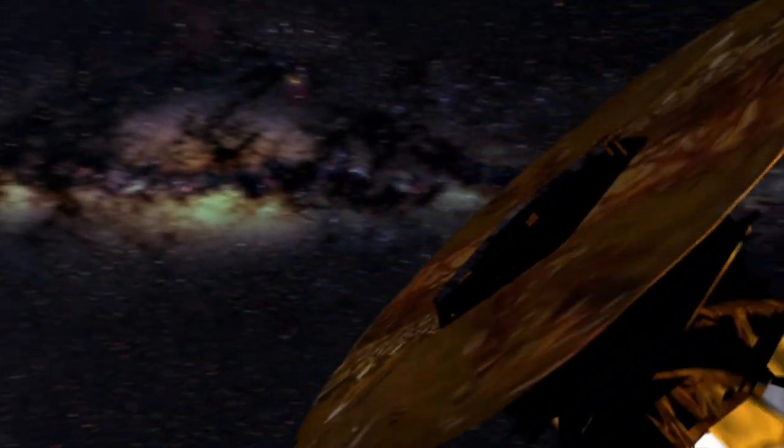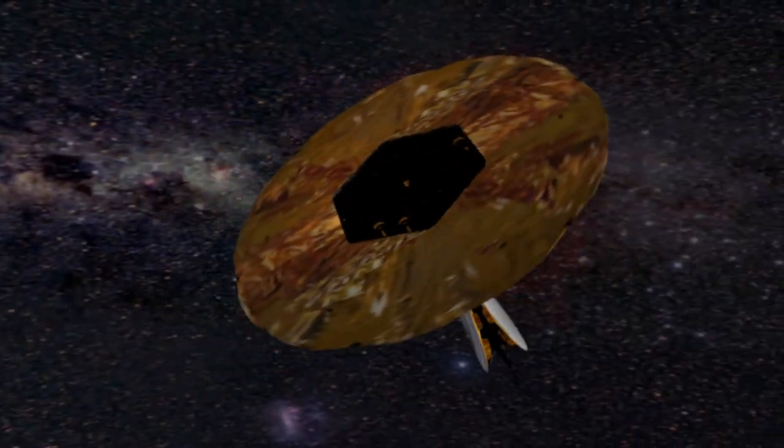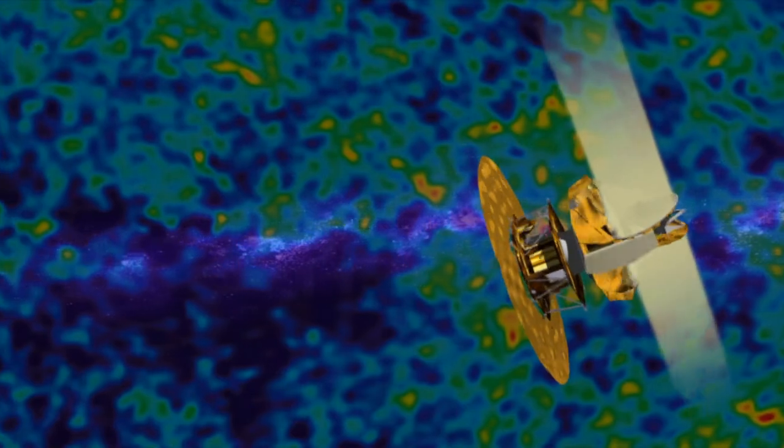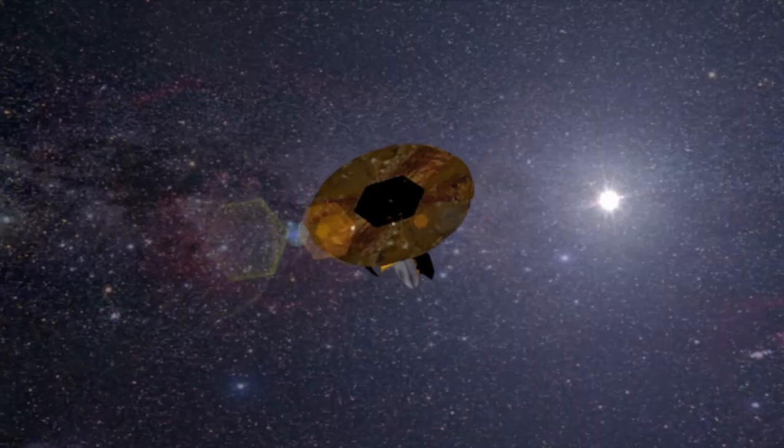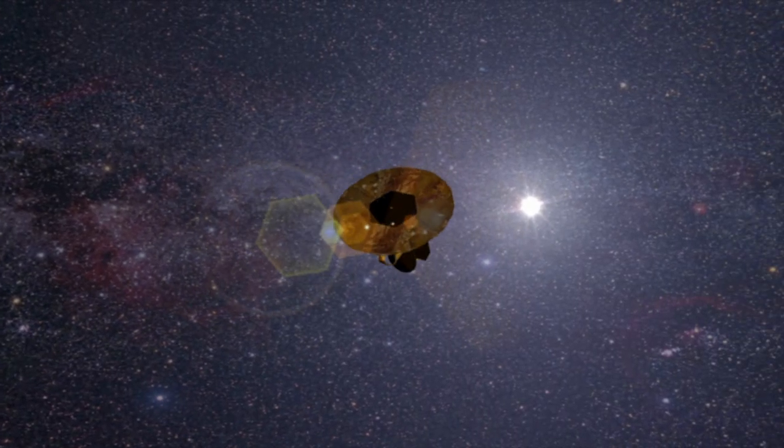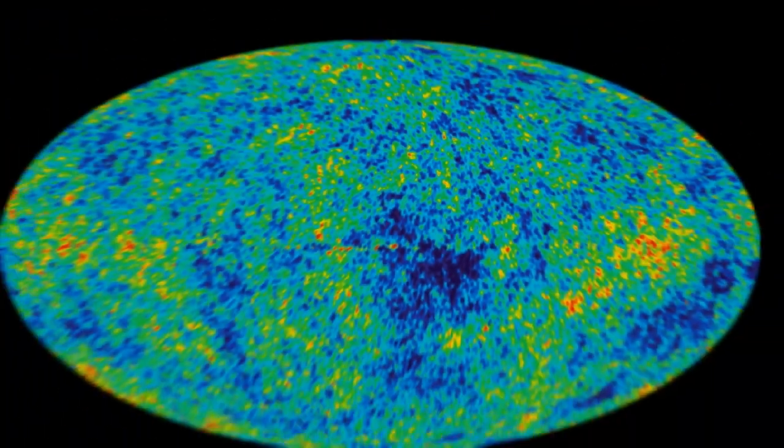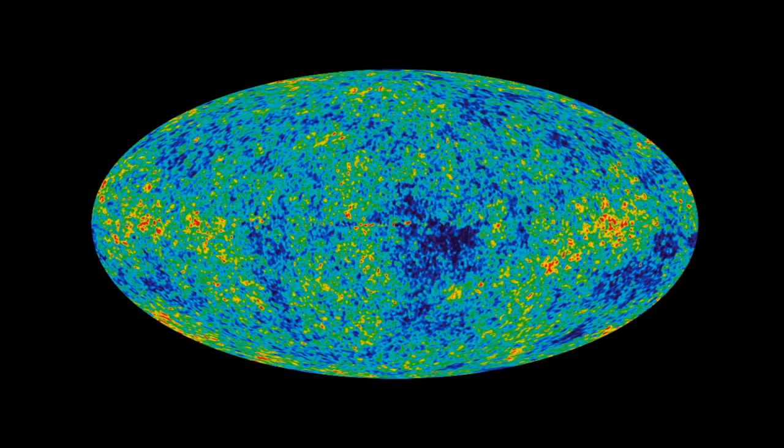And then there's WMAP, the Wilkinson Microwave Anisotropy Probe. In just over two years in space, it had already mapped the cosmic background radiation to unprecedented detail. WMAP gave cosmologists the best view yet of one of the earliest phases of the Universe more than 13 billion years ago. Opening up the space frontier has been one of the most exciting developments in the history of the telescope. So what's next?